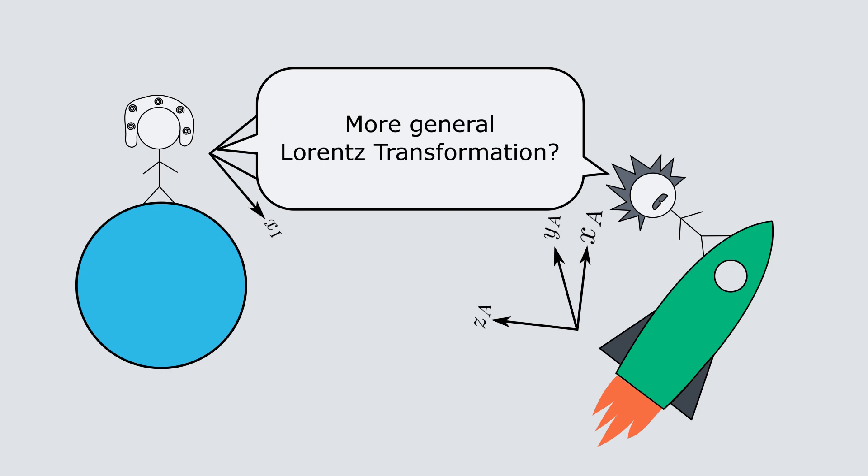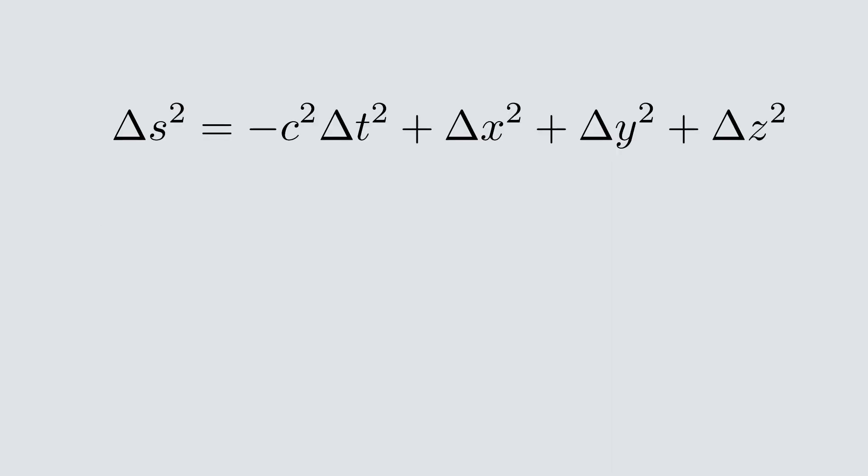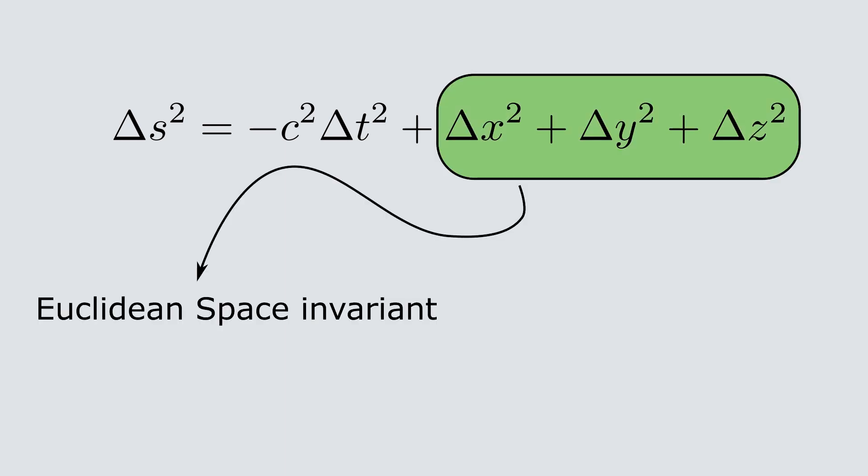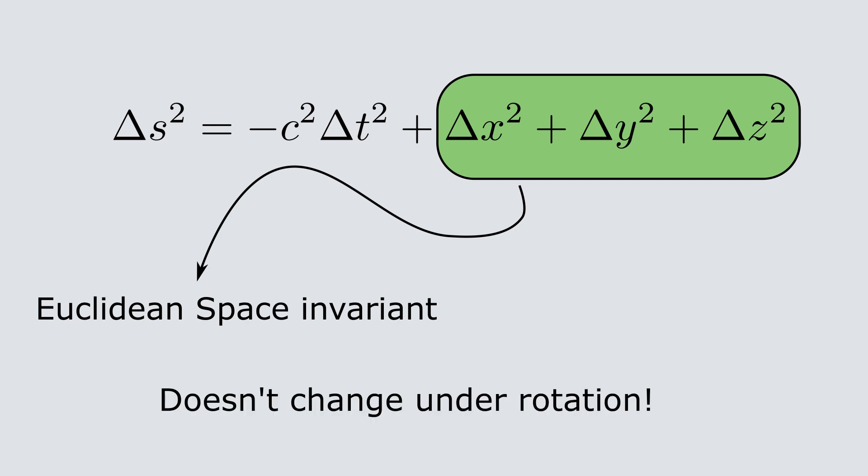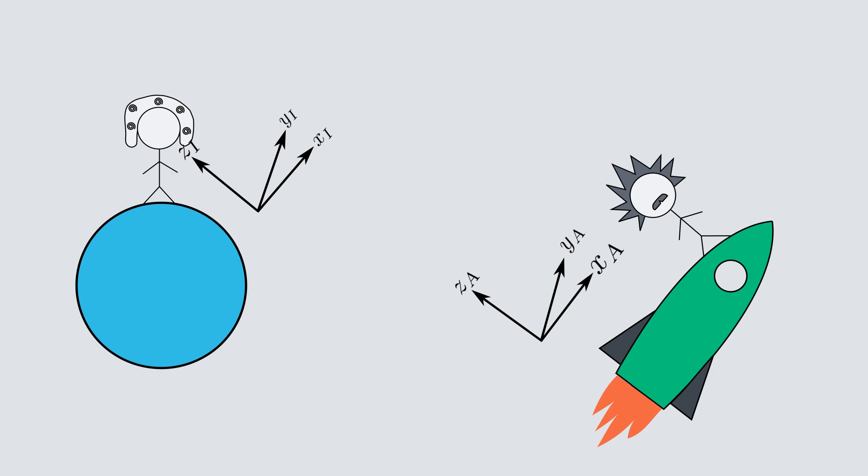Since this quantity does not change, it encodes all of the information about the symmetries of Minkowski space. These three terms here make up the invariant for three-dimensional Euclidean space, which doesn't change under rotations. Since nothing is different when we rotate the axes of the different reference frames, we will always be able to line both x-axes with the direction of motion, and so we don't need a more general Lorentz transformation after all.